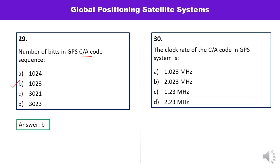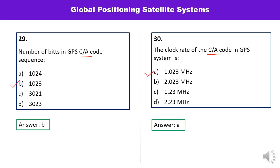Question number thirty: The clock rate for the C/A code in GPS system — what is the clock rate? The clock rate is 1.023 megahertz. So mark A as the correct answer.